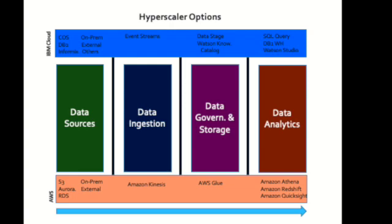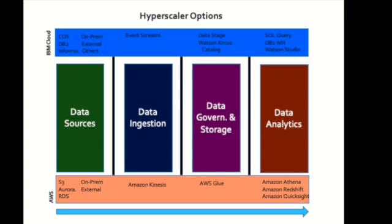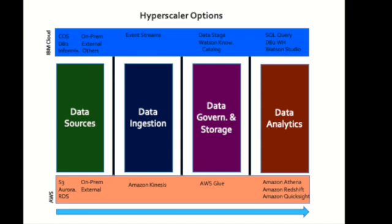By now, you have probably figured out why data lakes exist. We have various systems of records, systems of engagement or user interfaces, and streaming data that can be batched, internal, or external data. The combination of all these types of data sources could lead us to powerful insights about what is happening around us and allow us to make more intelligent decisions. We have multiple hyperscaler options for creating the data lake architecture. Data sources can be from anywhere and be of any type.